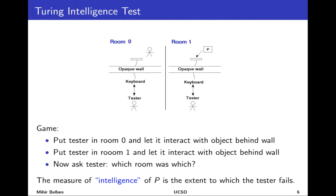The game proceeds by putting the tester first in room 0 to interact with the object behind the wall, then in room 1, and then asking which room was which. The tester doesn't know a priori which is room 0 and which is room 1 — it's not written on the door. If the tester correctly identifies which room it was in, the program is not doing a good job. But if the tester says it really can't tell whether it was talking to a person or a program, then the program is successfully imitating a person.